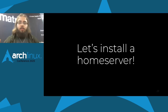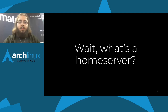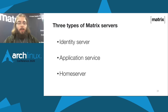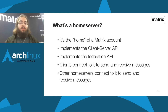Now that we've gone through that chunk of information, let's install the home server. But wait — what's a home server? In Matrix you've got roughly three types of servers: an identity server — an address book of email addresses and phone numbers associated with Matrix accounts — application services which are bridges and more advanced bots, and home servers. A home server is basically going to be the home of a Matrix account. It implements both the client-server API and the federation API, so both clients and other servers connect to it using their respective APIs to send and receive messages.